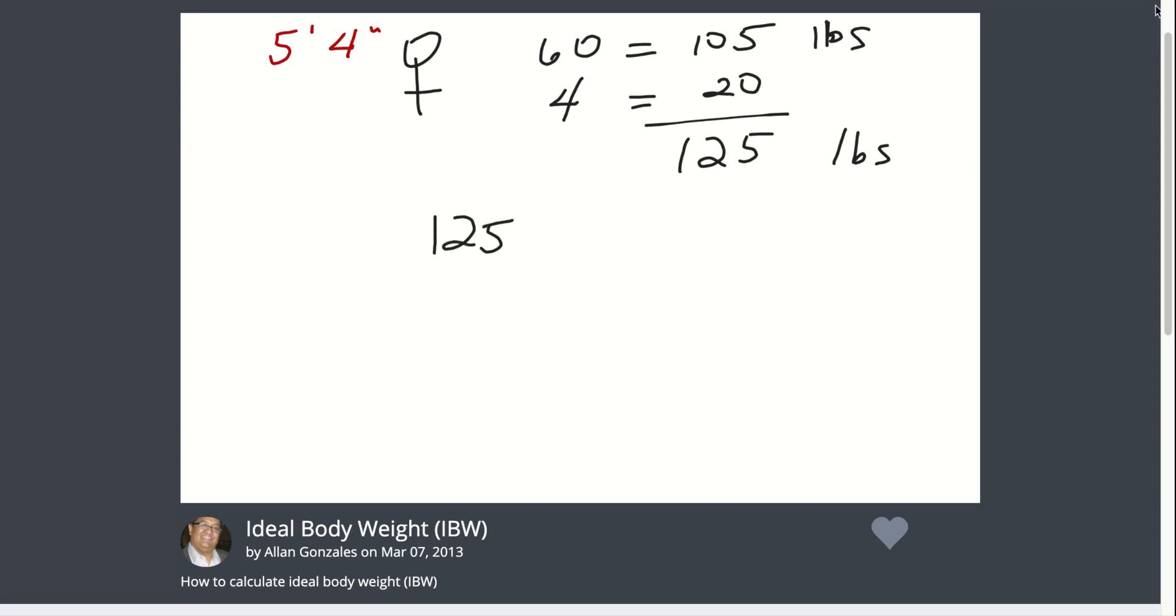And then 125 pounds divided by 2.2 kilograms per pound. And that will give you 56.8 kilos. However, based on our conversation, we will drop the decimal point and just take the whole number for uniformity's sake. So this will be 56 kilos for a female who is 5'4". And this is the ideal body weight.